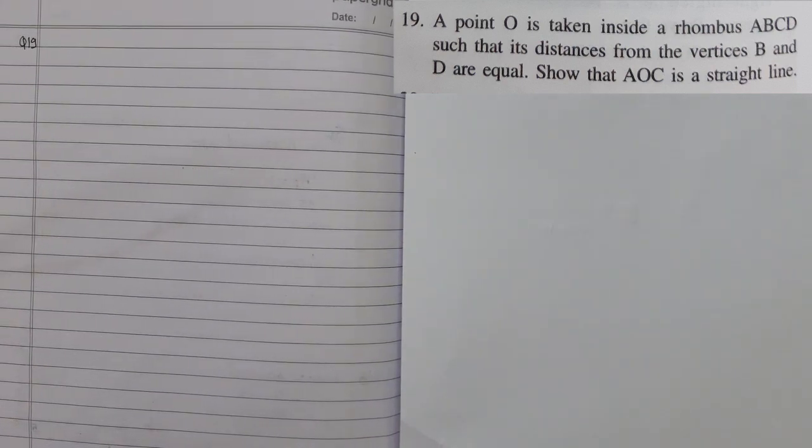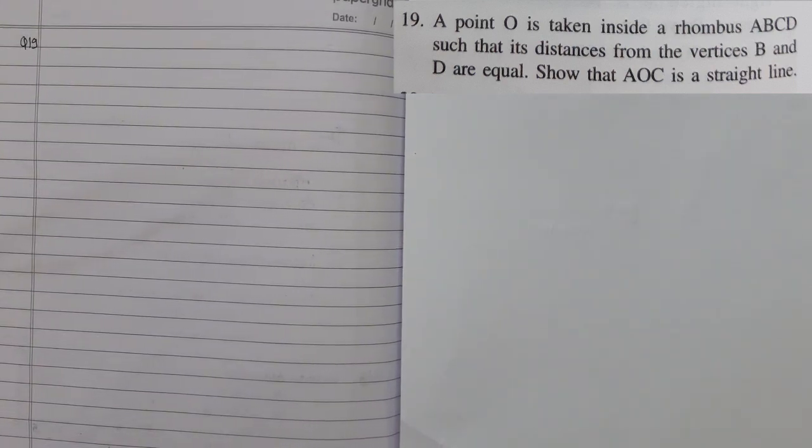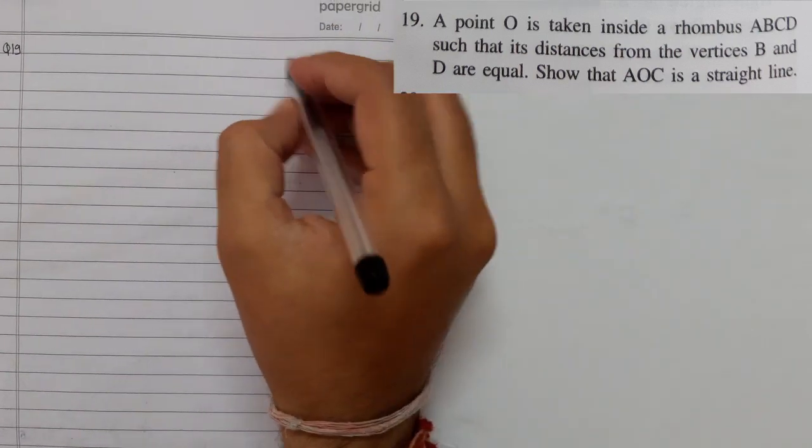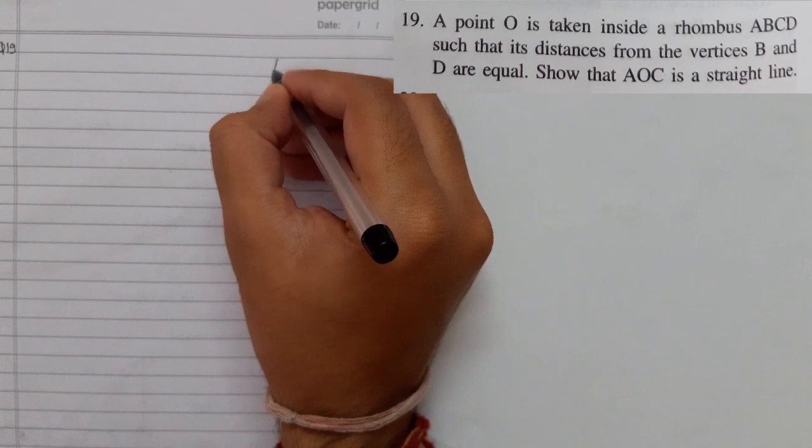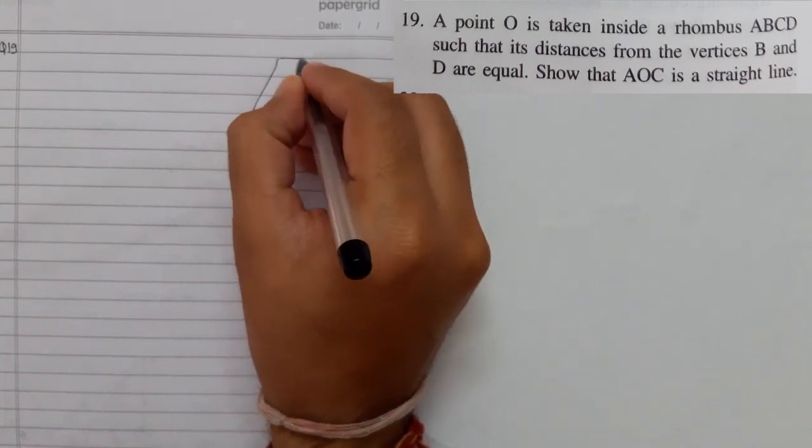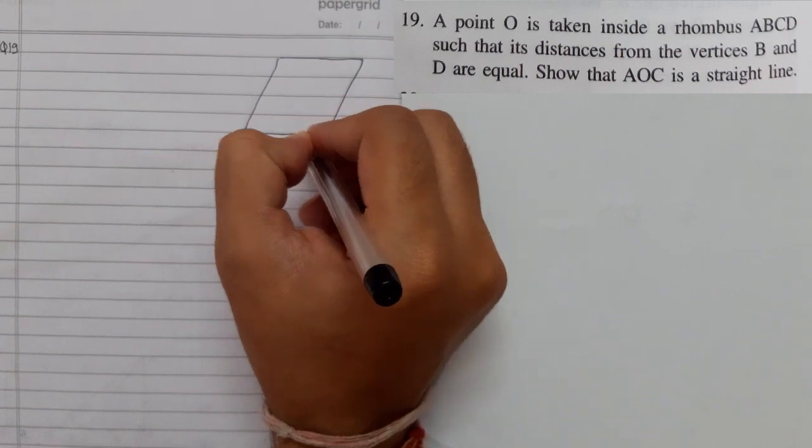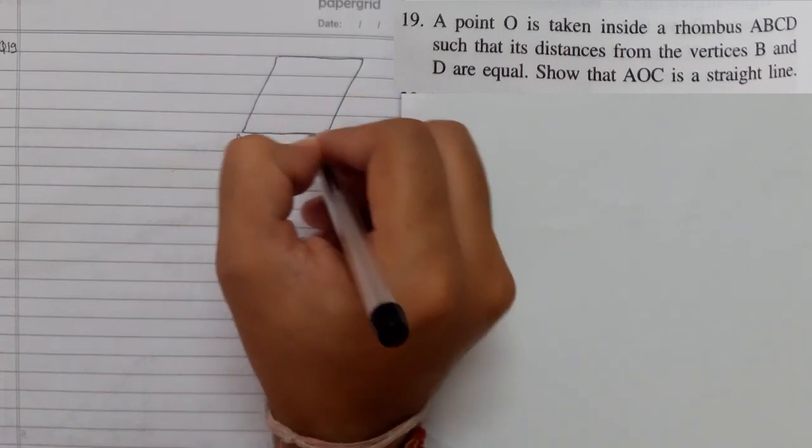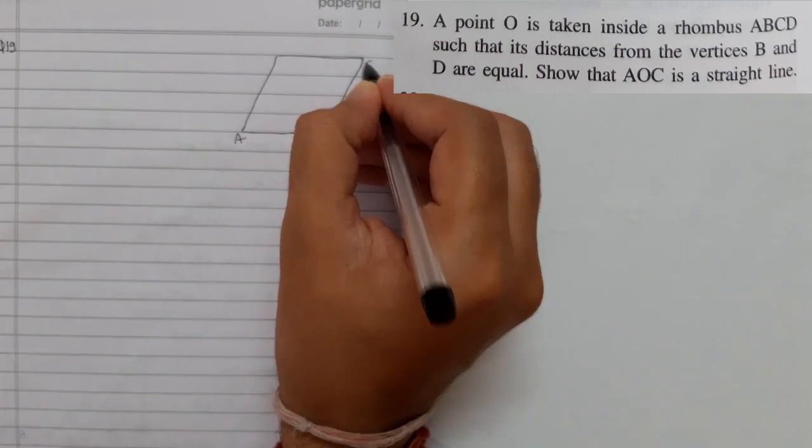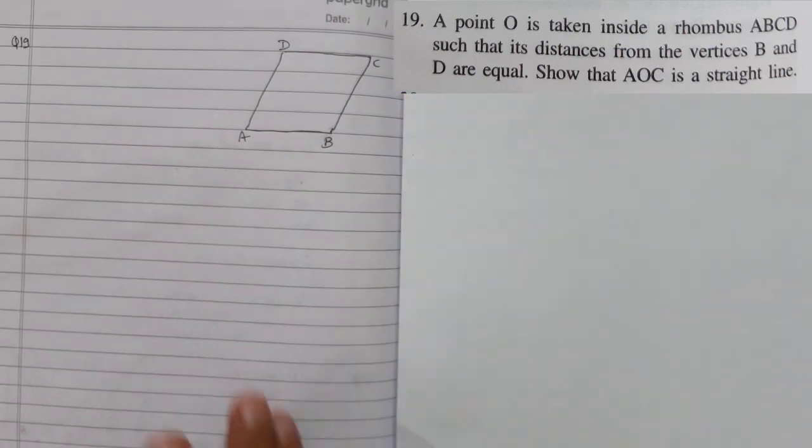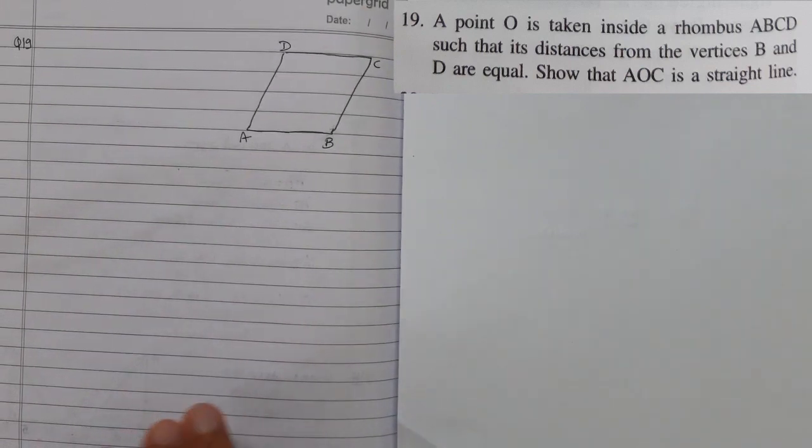So in the next question we have a point O is taken inside a rhombus ABCD. Since they are giving us that the figure is a rhombus, we need to know first of all all the properties of rhombus. We have discussed in great detail the properties of different quadrilaterals. You can watch that video. I will share the link.